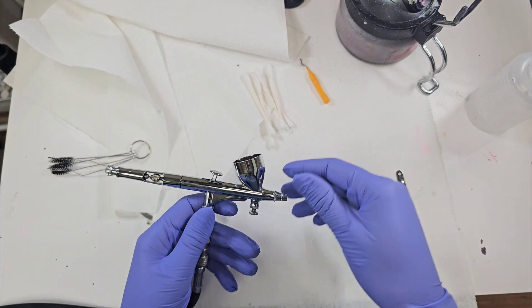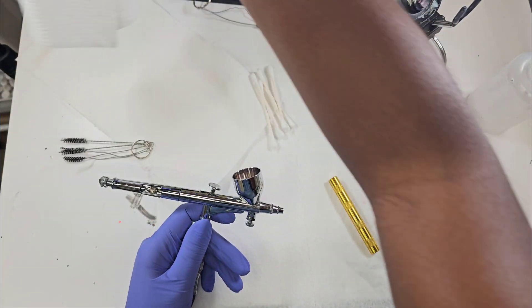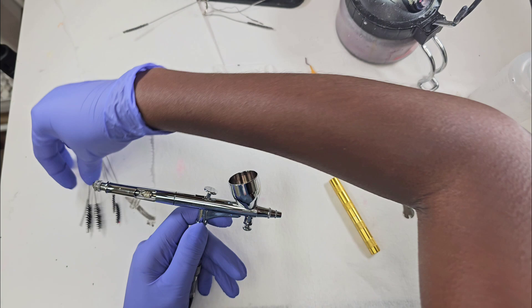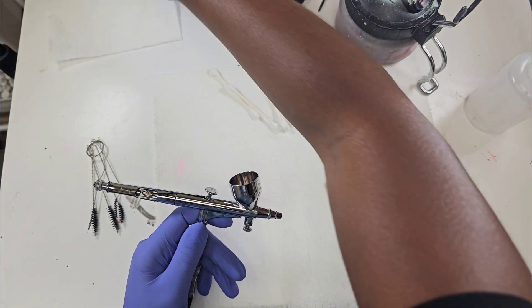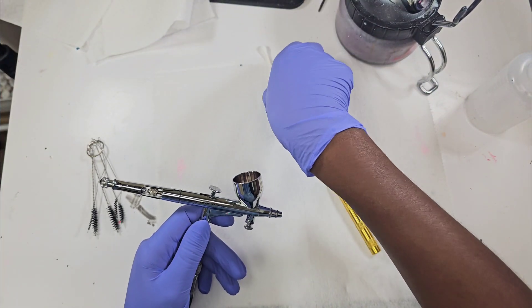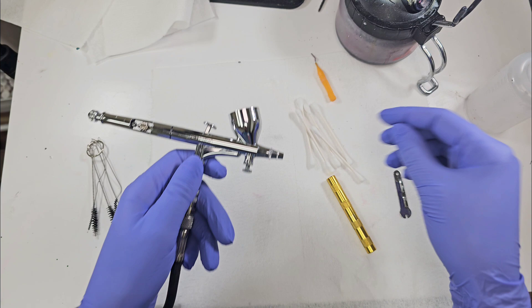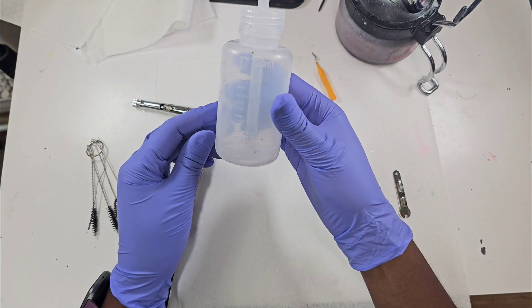Alright, here we are with a cleaning video. This is my Iwata handpiece and of course I have the airbrush shopping guide that you guys are going to have access to. What I use to clean it is this Madea cleaner in a squeeze bottle - love that bottle.